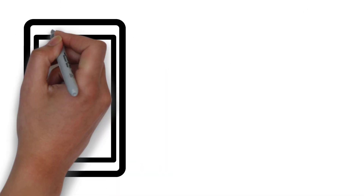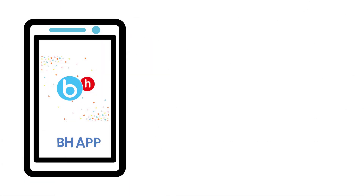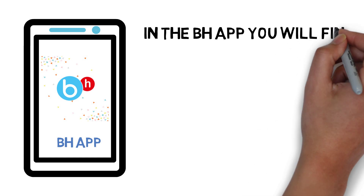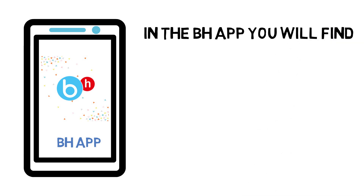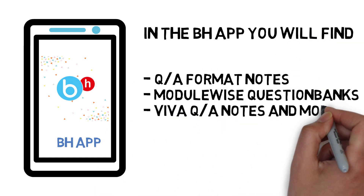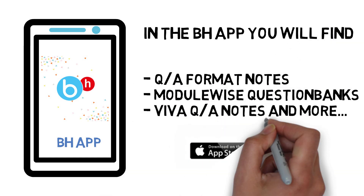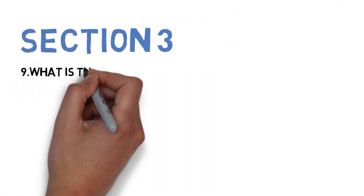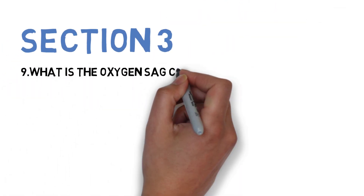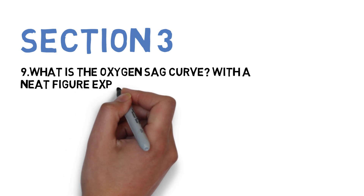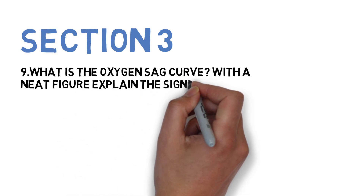These are the most important eight questions you need to do for this subject. More detailed questions are available in the Brain Eaters app, so make sure you check it. Let's go to Section 3, wherein the first question is what is the oxygen sag curve — explain it with a neat figure and explain its significance.